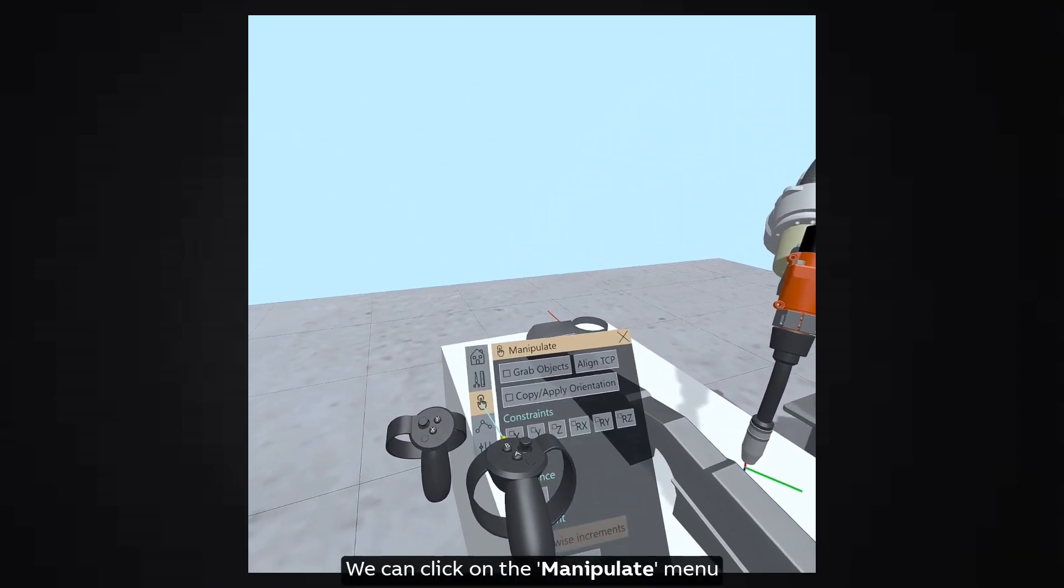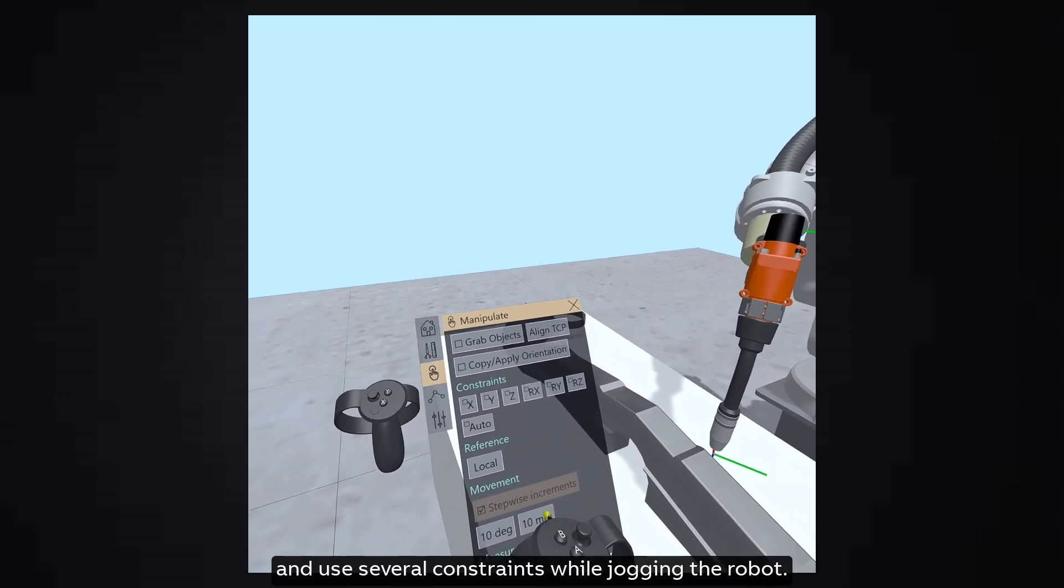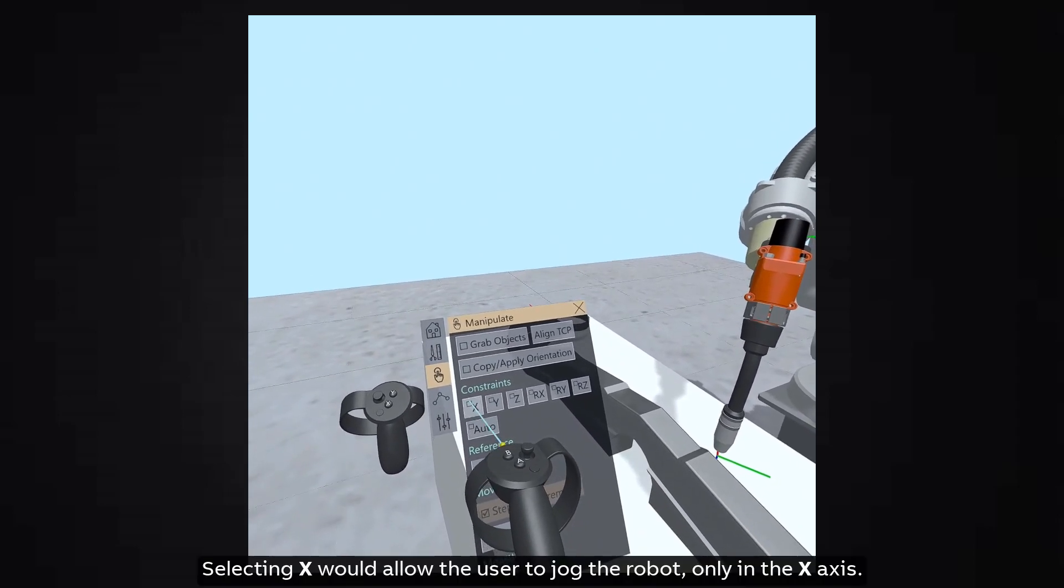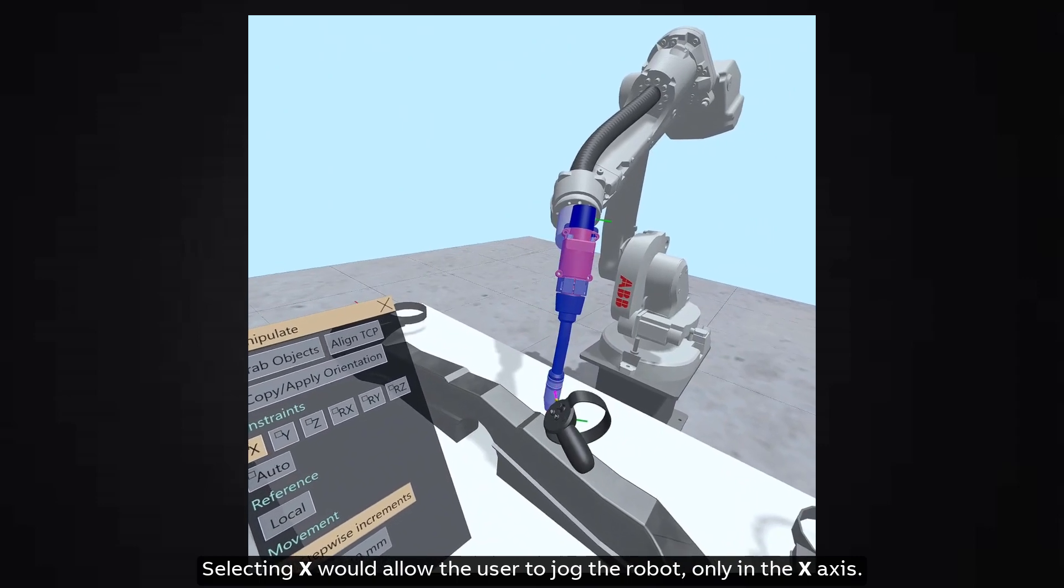We can click on the manipulate menu and use several constraints while jogging the robot. Selecting X would allow the user to jog the robot only in the X axis.